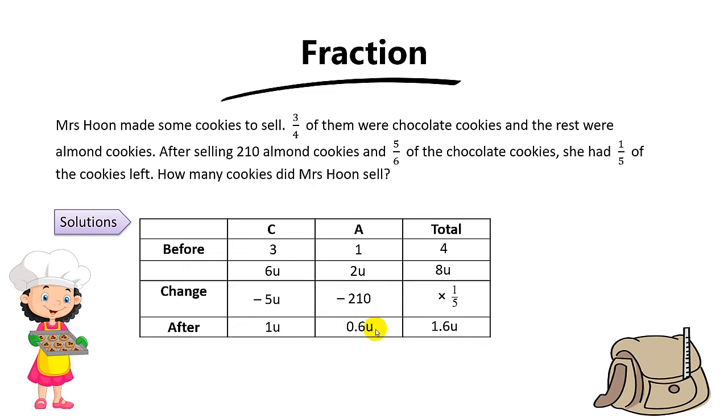Now how do we find 1 unit? Let's look at the almond. At first, the almond has 2 units. In the end, it has 0.6 units. So the difference will be 1.4 units. This 1.4 units equals 210, because she sells 210 almond cookies. To find 1 unit, you take 210 divided by 1.4, which gives you 150.